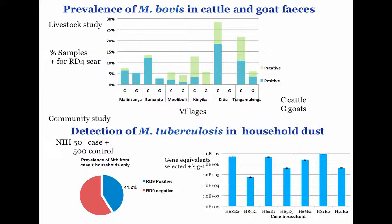The community-wide study data is coming in more slowly as we've got many more samples there. It's a case-control design. We've found nothing in the controls in terms of dust. Around 40% of the dust in the positives shows high levels — counts up to 10 to the 7 — in the dust in their houses or huts and just outside. They tend to spit a lot just outside the house, and that's inside as well.